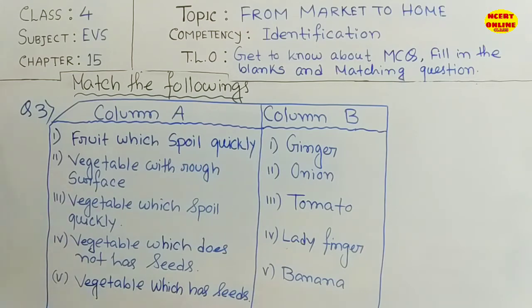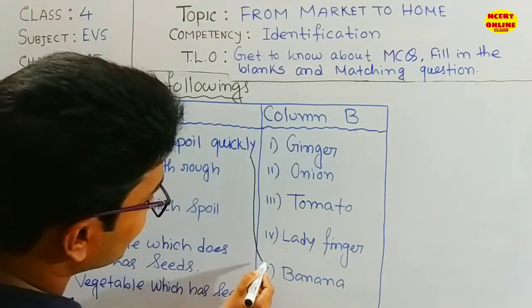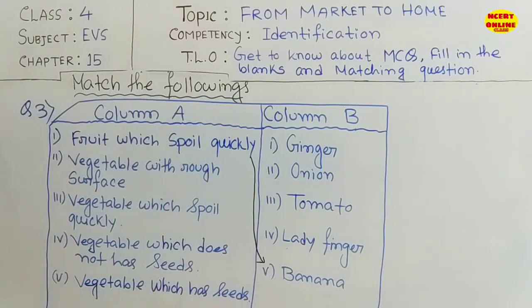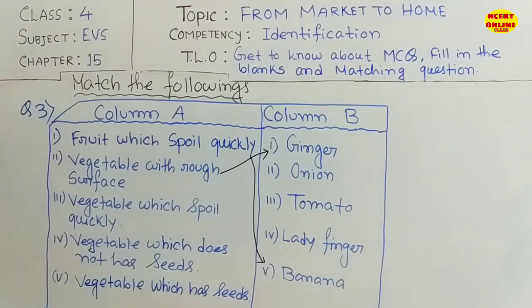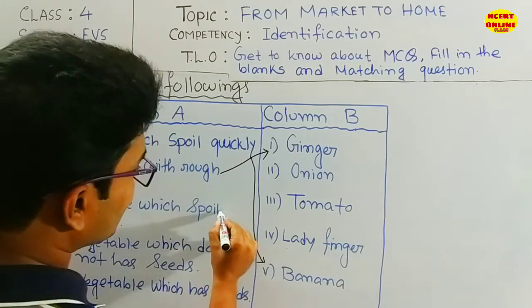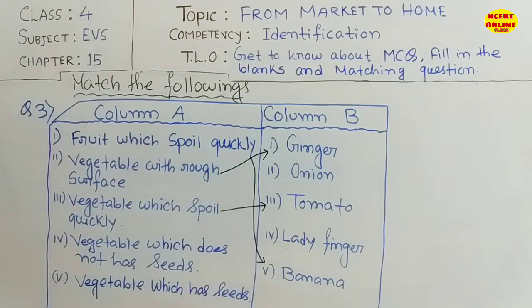Fruit which spoils quickly — which fruit goes bad very fast when left outside? That is banana. It spoils very quickly when kept outside. Then, vegetable with a rough surface — which vegetable has a rough surface? That is ginger. Its surface is very rough, not smooth. Then, vegetable which spoils quickly — that is tomato. If you leave a tomato out for one or two days in this heat, it spoils very fast.